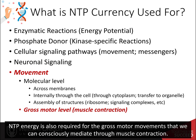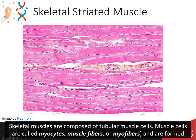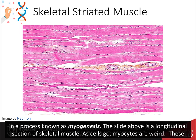NTP energy is also required for the gross motor movements that we can consciously mediate through muscle contraction. Skeletal muscles are composed of tubular muscle cells. Muscle cells are called myocytes, muscle fibers, or myofibers, and are formed in a process known as myogenesis.